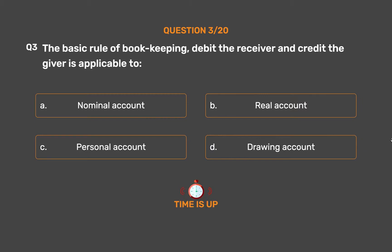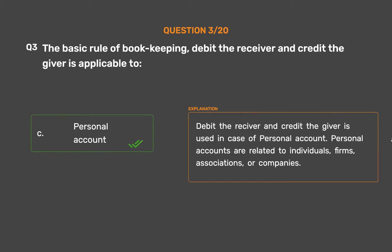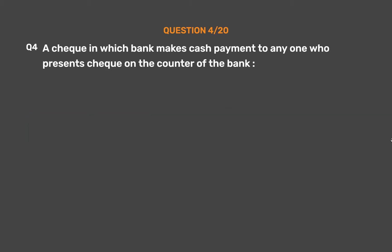The correct answer is option C: personal account. 'Debit the receiver and credit the giver' is used in the case of personal accounts. Personal accounts are related to individuals, firms, associations, or companies.